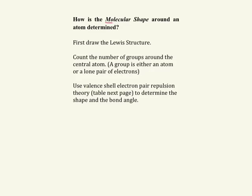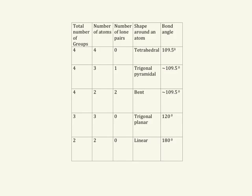How is the molecular shape around an atom determined? To find out the molecular shape, first you have to draw a Lewis structure, which I already explained in my last video. Once you are done drawing the Lewis structure, you have to count the number of groups around the central atom. A group is an atom or a lone pair of electrons. Then we are going to use the valence shell electron pair repulsion theory to find the shape and the bond angle.